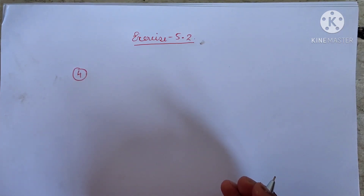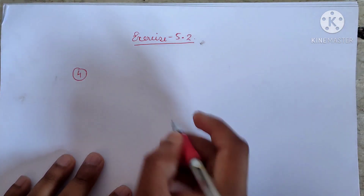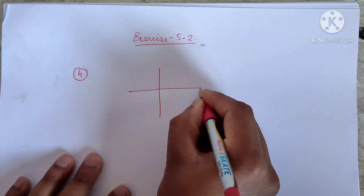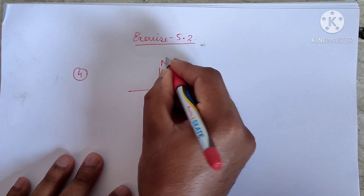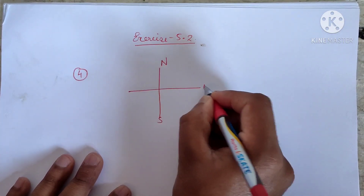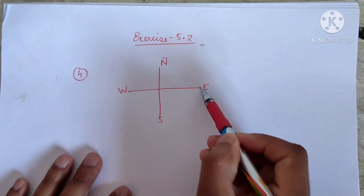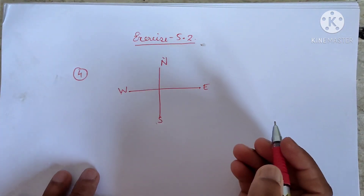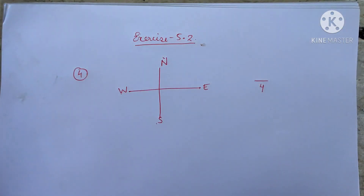Question number four: which part of your revolution have you turned if you stand facing east and turn clockwise to face north? We have to tell what part of the revolution. We know there are four directions — north, south, east, and west — so the total revolution is always four.